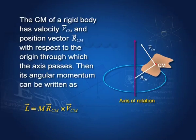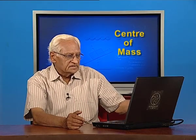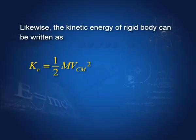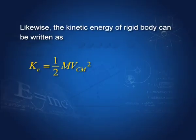Let us take a rigid body again. This time its centre of mass is moving in a certain direction, and with respect to a certain axis of rotation, the position vector of the centre of mass is R_CM. One can write its angular momentum as M·R_CM × V_CM, since these are vectors and we take the cross product. More on this in the next lecture, where we shall talk about angular momentum. The kinetic energy of a rigid body can be written as (1/2)·M·V_CM².